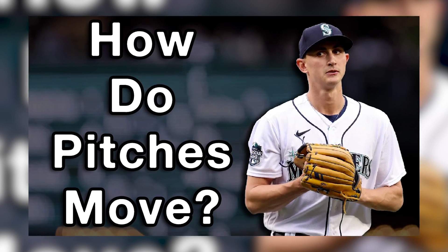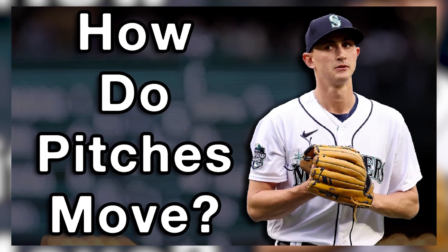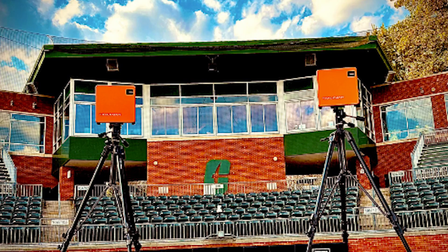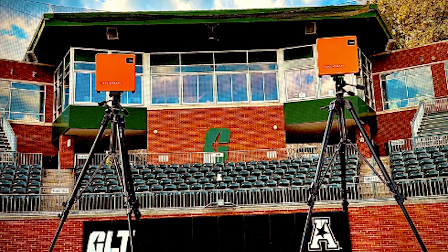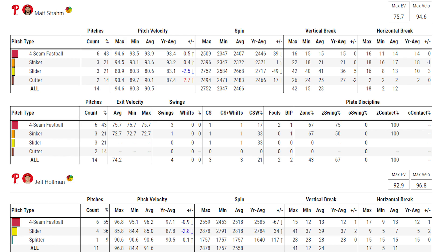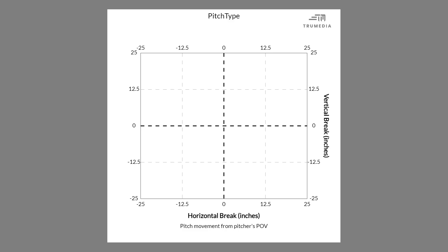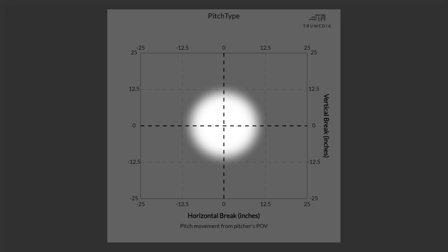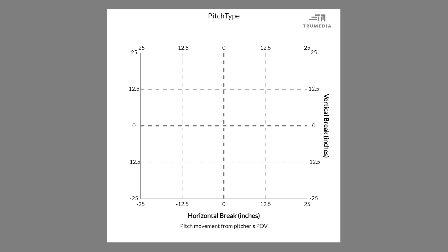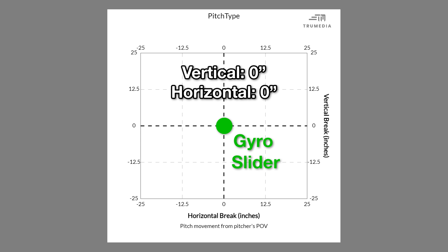Short form movement is the language of pitching. Pitchers and coaches use it daily to understand what they're doing to the ball. It's the output of these things you see all the time in spring training videos called Trackman units. We're just going to see short form movement referred to more and more as the years progress in baseball. The center of a short form movement pitch plot is a zero-zero pitch, often called a bullet slider or gyro slider — it has zero inches of horizontal break and zero inches of vertical break.